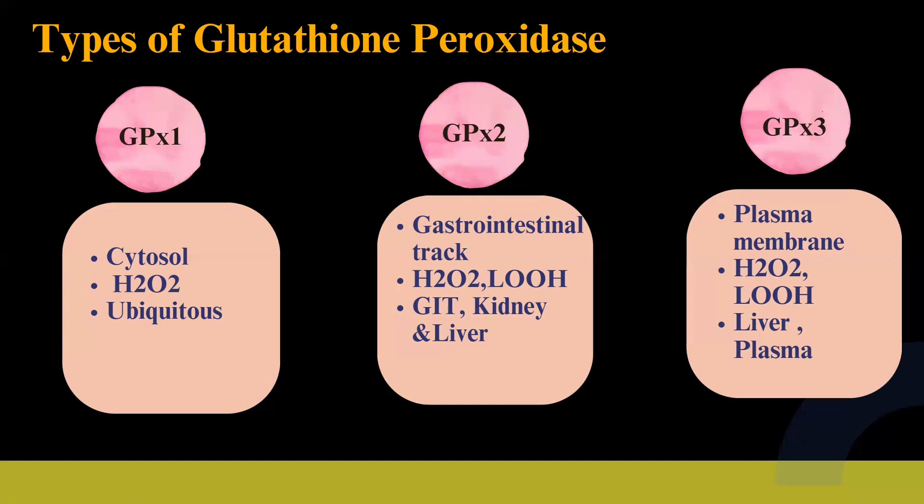Glutathione peroxidase 3 is located in the plasma membrane. Its substrate specificities include hydrogen peroxide and lipid hydroperoxide. Its tissue distribution includes the liver and plasma. It functions to protect the plasma membrane and extracellular fluid from oxidative damage.